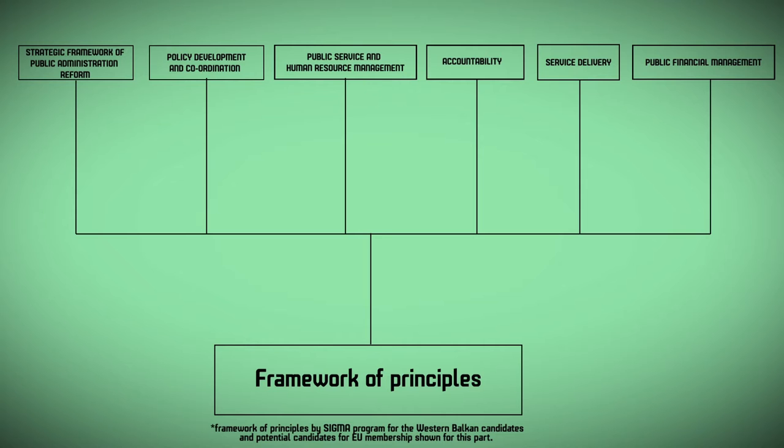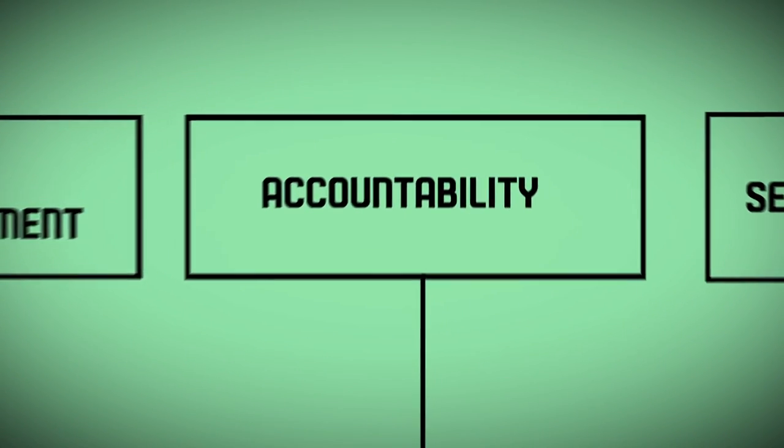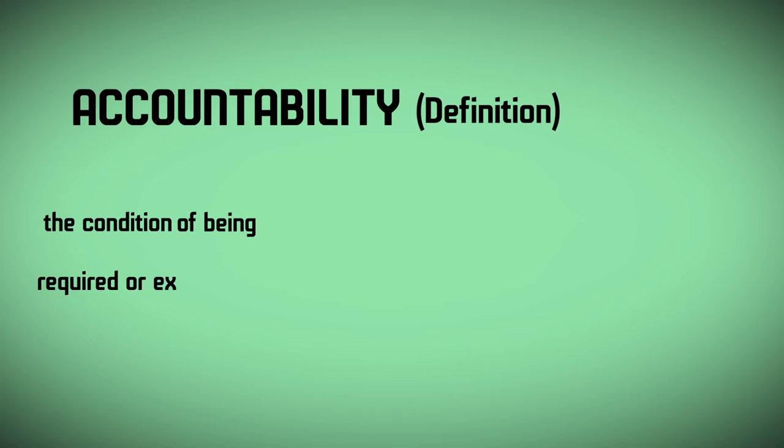One of the six areas of public administration reform is the area of accountability. Accountable is by definition the condition of being required or expected to justify actions or decisions, also responsible.